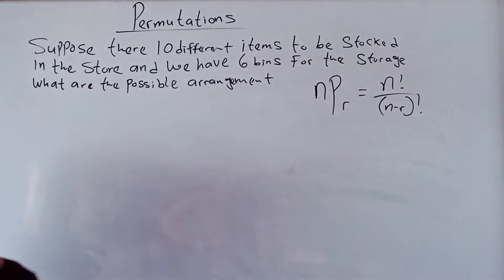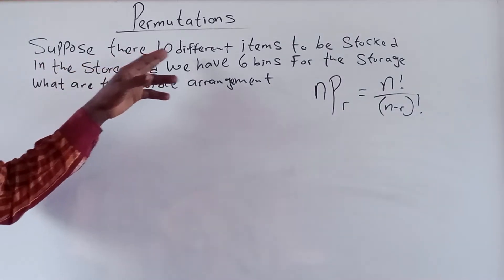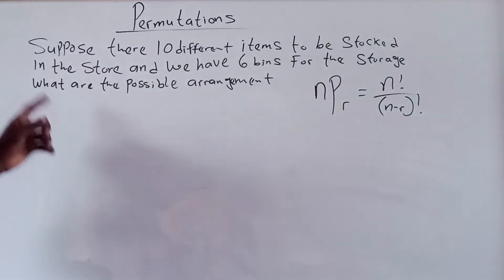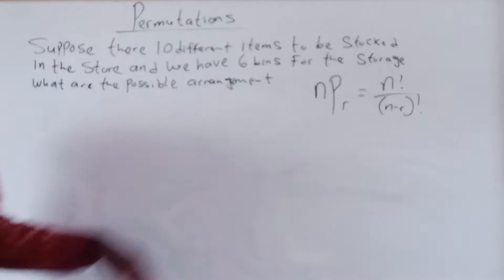So today's topic is permutation. For example, suppose there are 10 different items to be stored in the store and we have 6 bins for the storage.